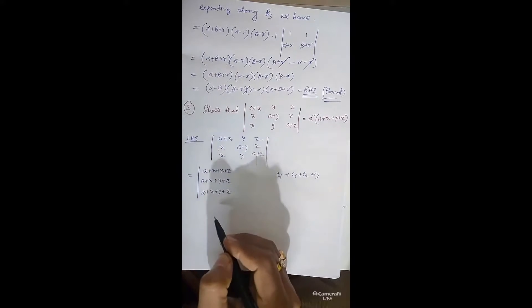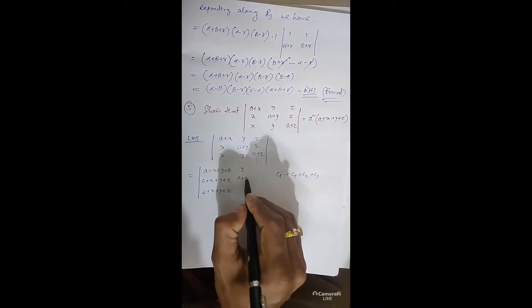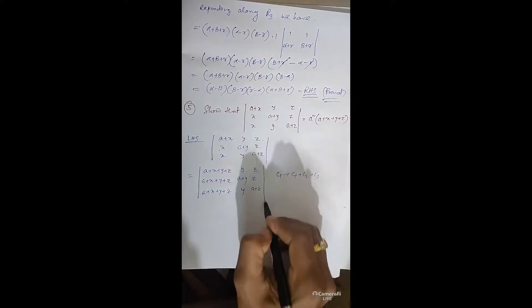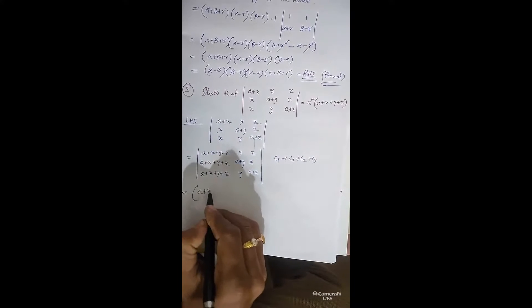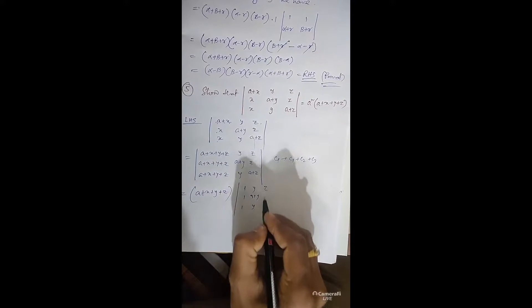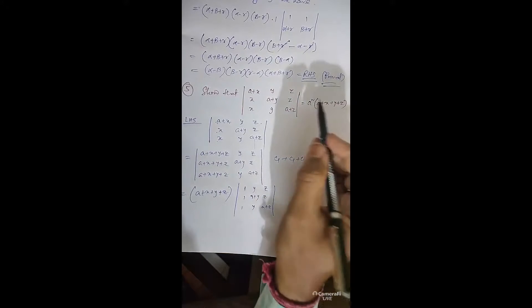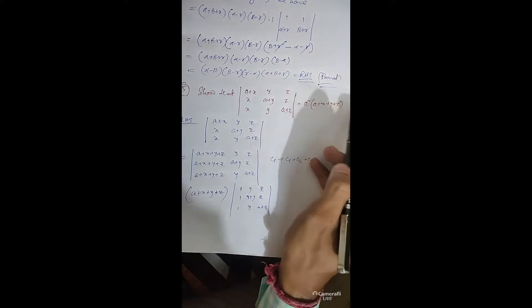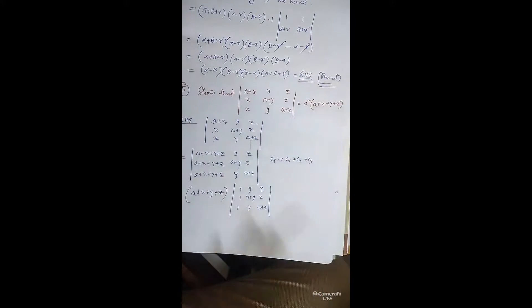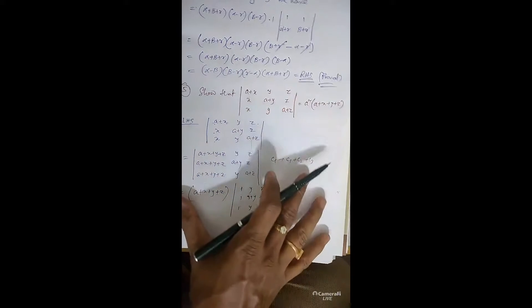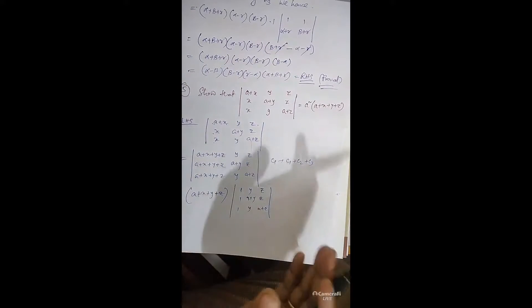Taking (A+X+Y+Z) common from C1, we have (A+X+Y+Z) times the determinant with rows (1, X, X), (1, A+Y, Y), (1, Z, A+Z). Now apply R2 minus R1 and R3 minus R1 to create zeros in C1. This gives (A+X+Y+Z) times the determinant with rows (1, X, X), (0, A, 0), (0, 0, A). The RHS also contains the factor (A+X+Y+Z), confirming we're on the right track.